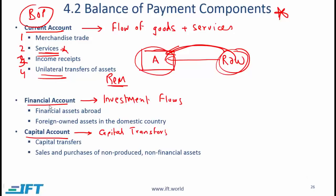The financial account has two subcategories: financial assets abroad and foreign-owned financial assets in the domestic country, also sometimes called the reporting country. With regards to financial assets abroad, a country's assets abroad are further divided into official reserve assets, government assets, and private assets. These assets include gold, foreign currencies, foreign securities, and the government's reserve position in the IMF.